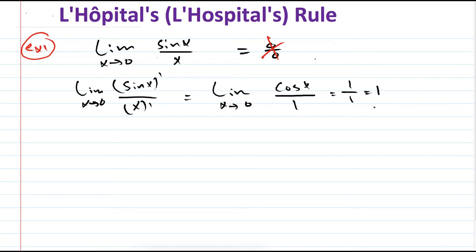It's very easy. All you have to do when you have an indeterminate form is find the derivative of the top and put it over the derivative of the bottom. Do not make the mistake of using the quotient rule — that is not the idea. The idea is to find the derivative of the first and put it on the derivative of the second, the derivative of the top on the derivative of the bottom, as you can see.